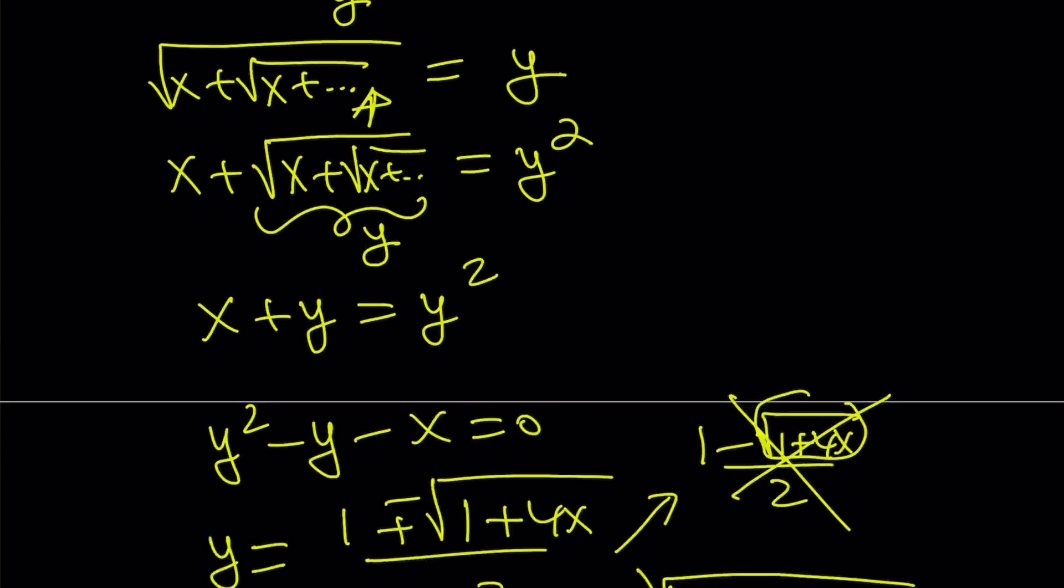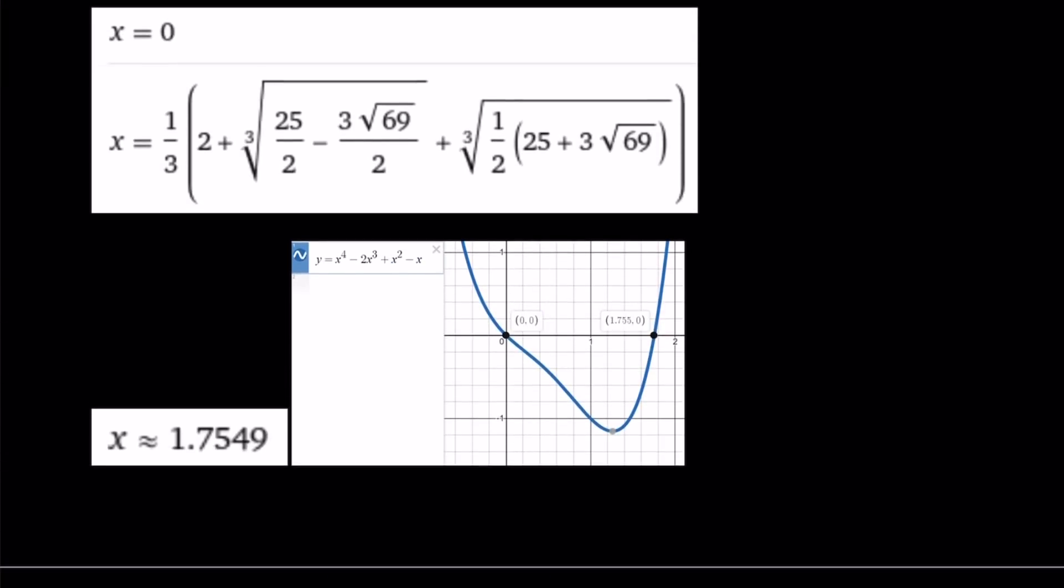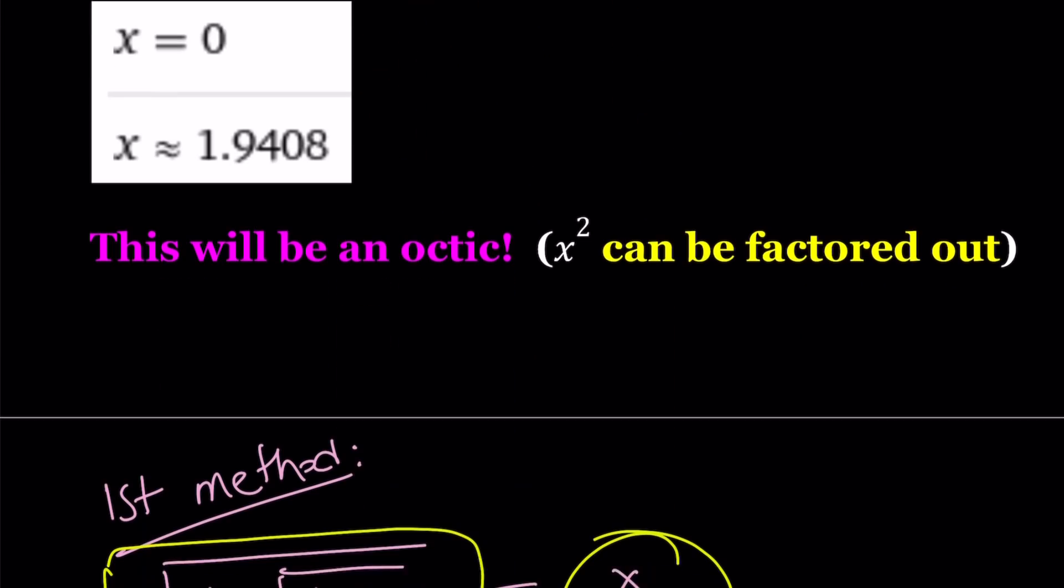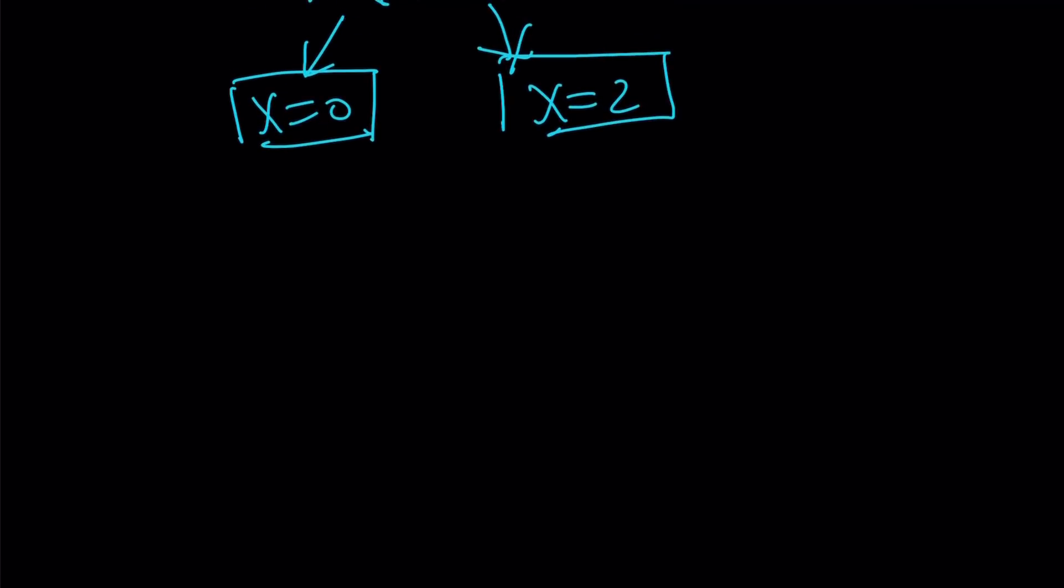Now, I want to go back to the finite cases. Notice that as I increase the number of radicals, I got closer to 2. It's actually kind of like a limit case. And you're going to notice that you're getting closer to 2 as you increase the number of radicals. So there are two solutions. They're both valid. Let's go ahead and talk about the second method.